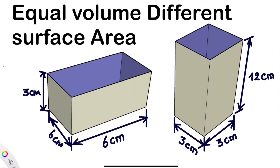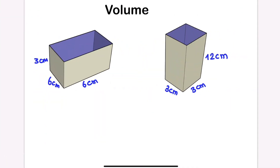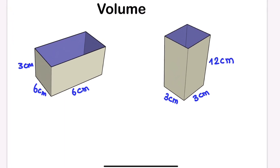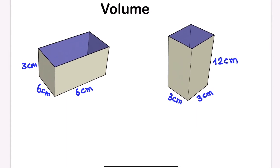Hello, welcome once more to Mathematics Pro. Today we have these two cuboids — they have the same volume but different surface area. You can use this as a project for optimization. Let's calculate the volume and surface area to compare which one has the most surface area. Let's get started by calculating the volume of both cuboids.